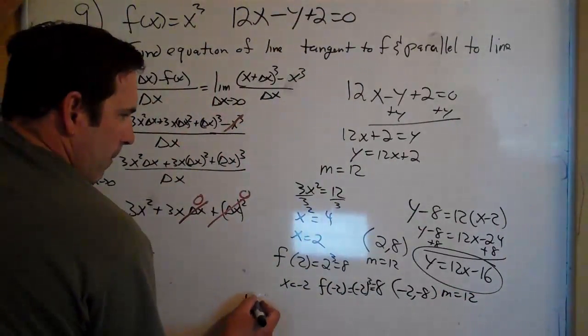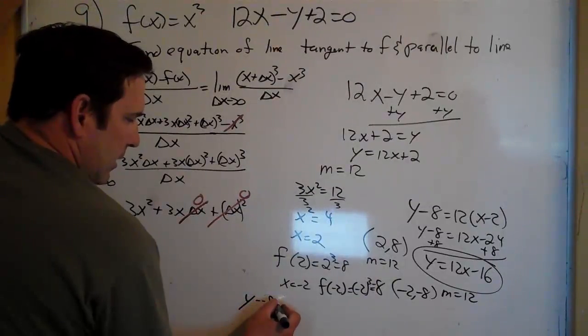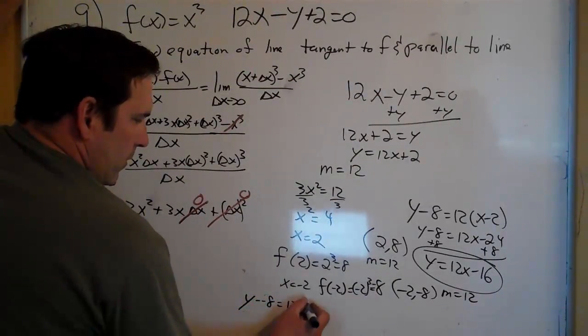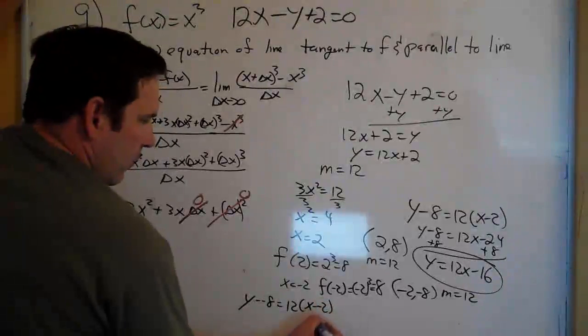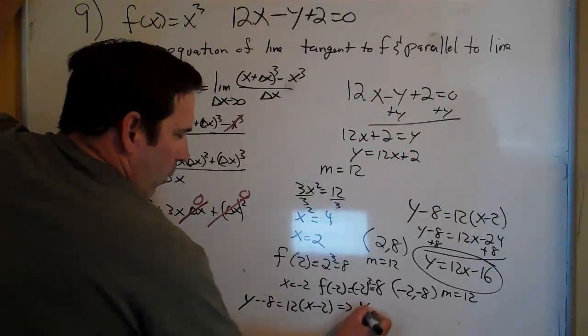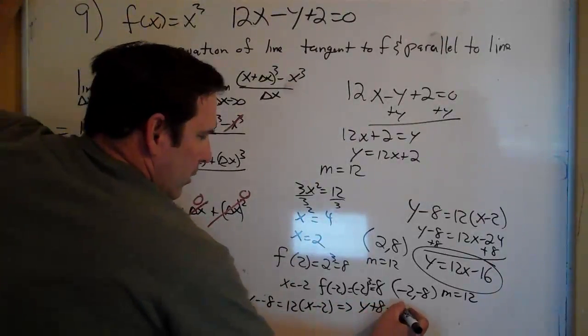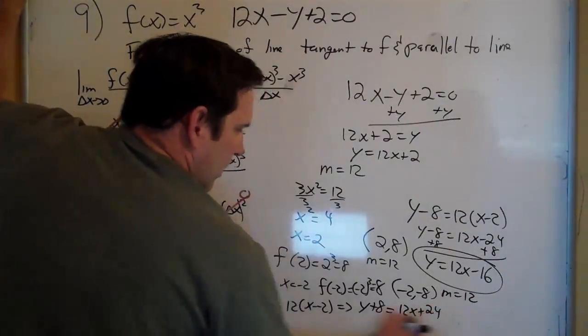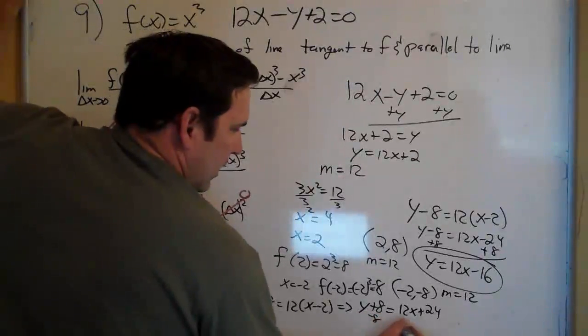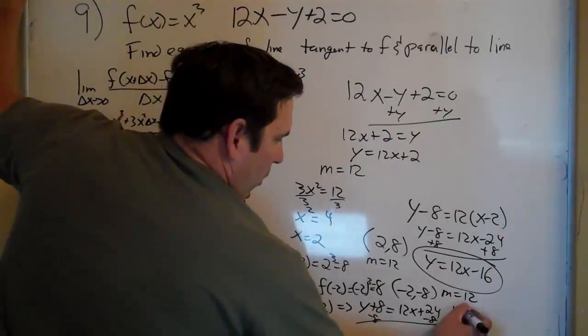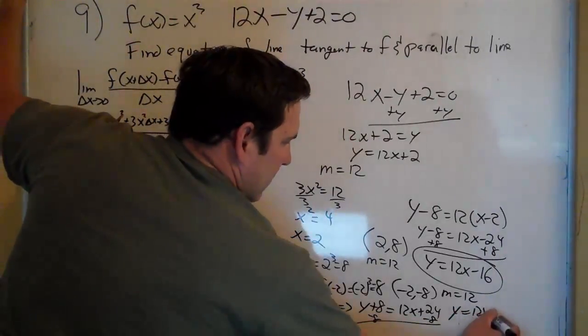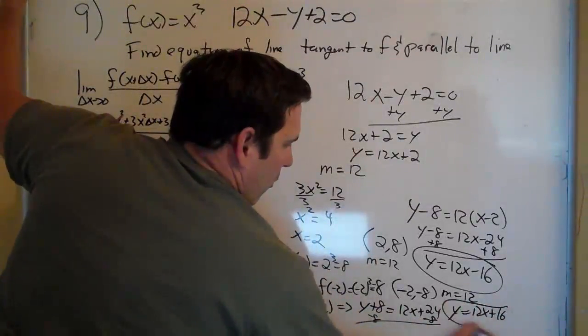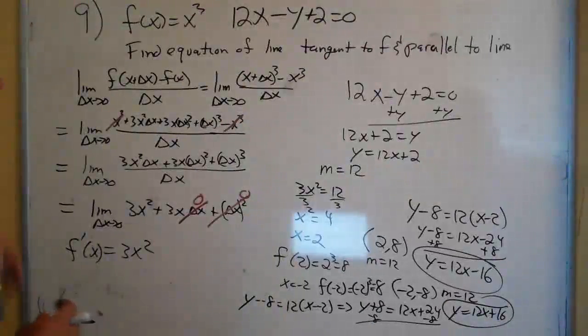So I'll have y minus negative 8 equals 12 times x minus negative 2. y plus 8 equals 12x plus 24, because of the double negative. Subtracting the 8, y equals 12x plus 16 would be the other one. Okay, hope that helps.